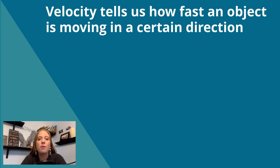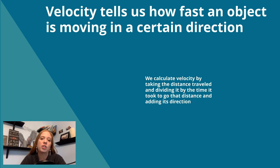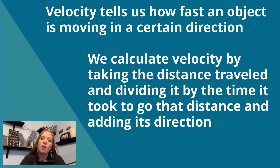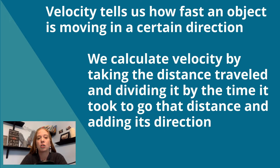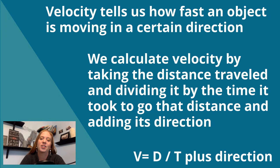Velocity tells us how fast an object is moving in a certain direction. We calculate velocity by taking the distance traveled and dividing it by the time it took to go that distance, and adding its direction. V equals D over T plus direction.